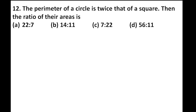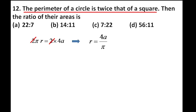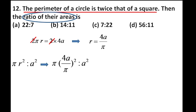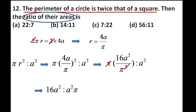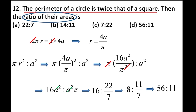The perimeter of a circle is twice that of a square. Find the ratio of their areas. We write 2πr = 2 × 4a. After simplifying, r = 4a/π. Ratio of areas = πr² : a² = π × (4a/π)² : a² = 16a²/π : a². Cancelling a², we get 16 : π = 16 : 22/7. Cross-multiplying gives 56 : 11. So our fourth option is correct.